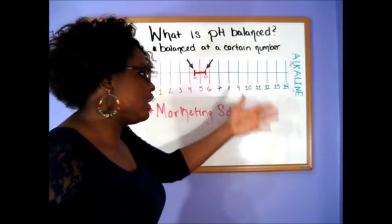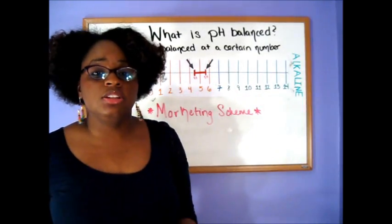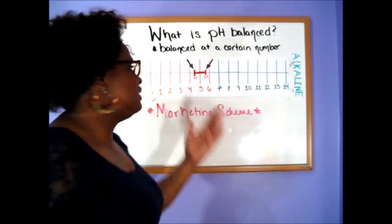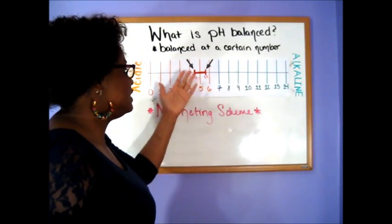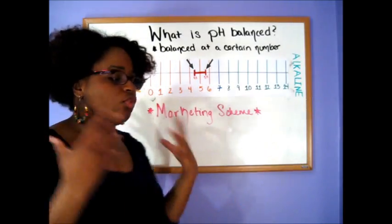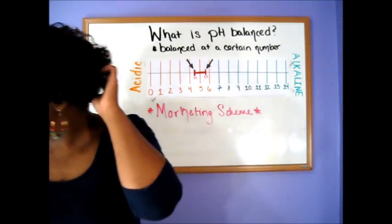It could be considered pH balanced, but it's not necessarily what you want for healthy hair. You want your hair to be in between that 4.5 to 5.5 range.